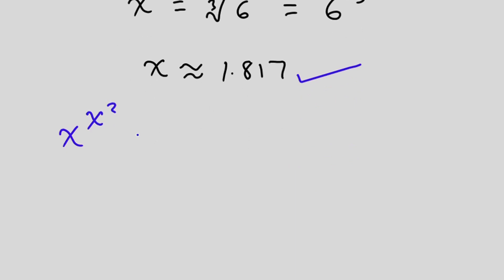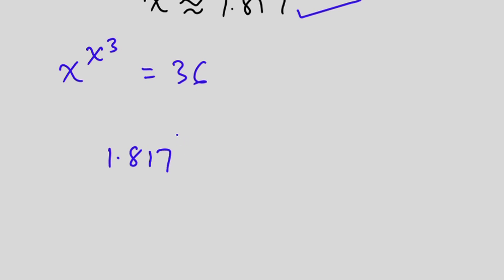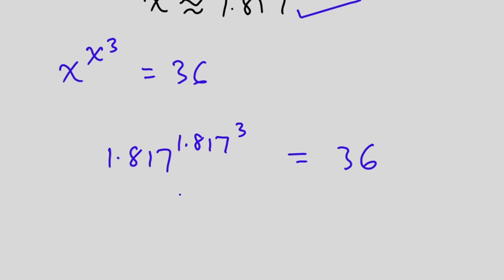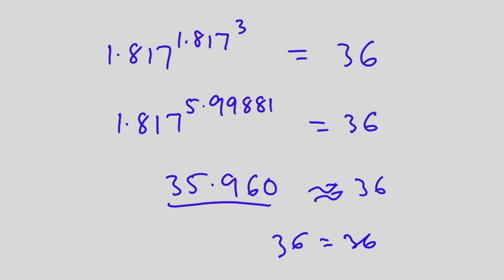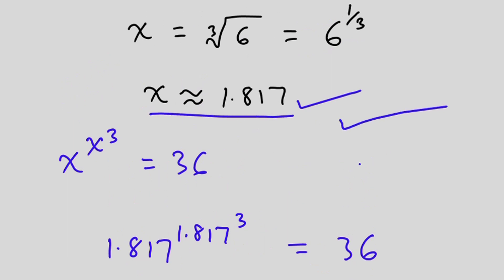Now let's go ahead and test whether this is the correct answer. We have x to the power x to the third power is equal to 36, with x equal to 1.817. So we have 1.817 to the power 1.817 to the third power, and this must equal 36. Focusing on the exponent first: 1.817 to the third power gives approximately 5.99881. Then 1.817 to the power 5.99881 gives approximately 35.960. This is not exactly 36 but when approximated it equals 36, confirming our answer is correct.